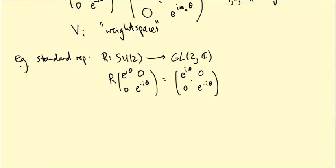The weight spaces are just the lines spanned by one zero and zero one, and the weights are one and minus one.